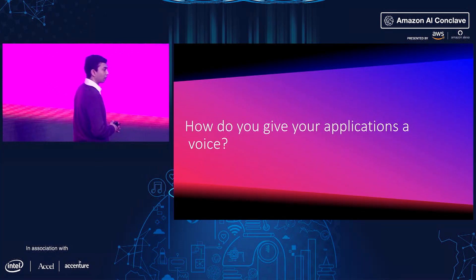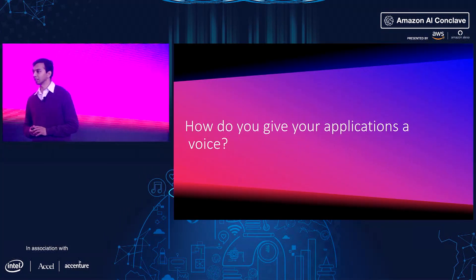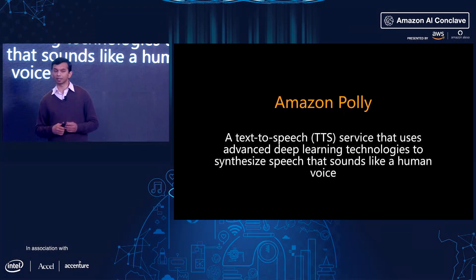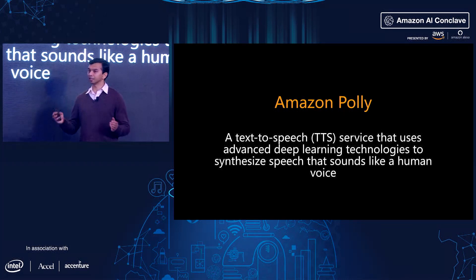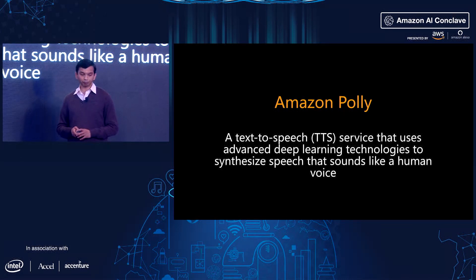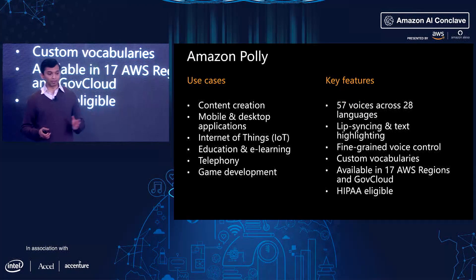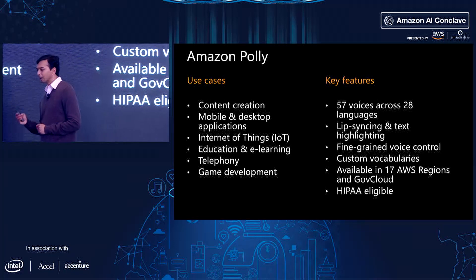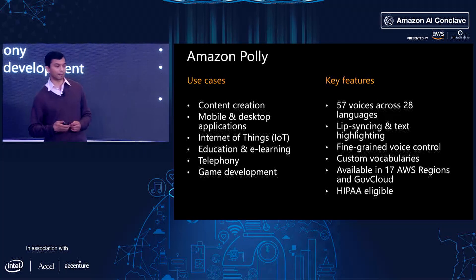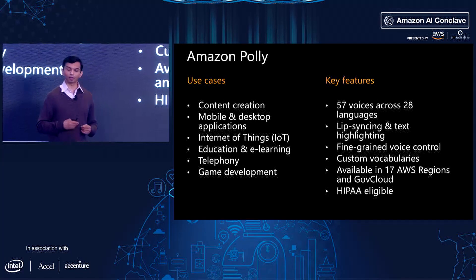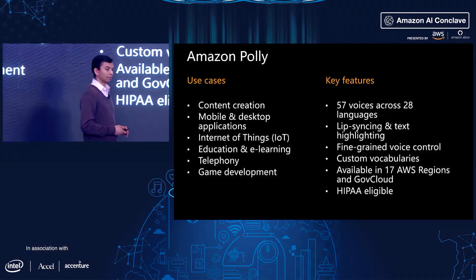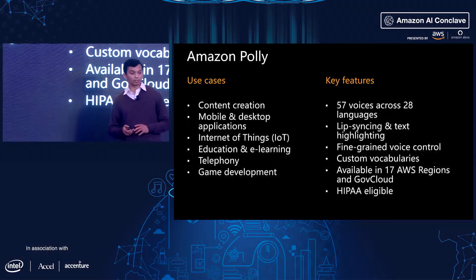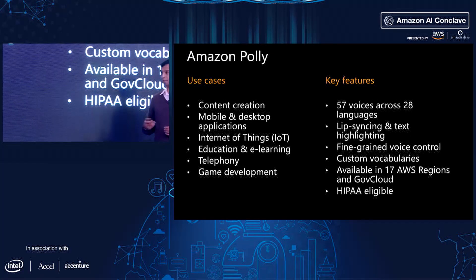The next problem we want to help customers with is how do you give your applications a voice? For that, we launched Amazon Polly, our text-to-speech service. Really simple — you give it a string of text and it converts that into lifelike speech. It gives you 57 voices across 28 languages, with really tight control over the voice — you can modify the tenor, the speed, and things like that to give whatever personality you want. It's available across 17 different regions and is a HIPAA-eligible service.